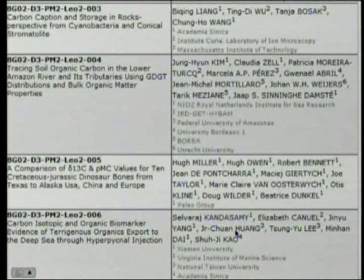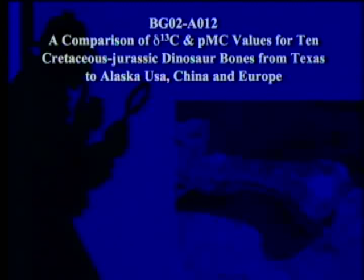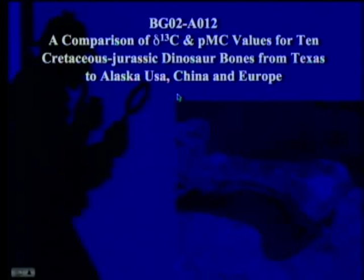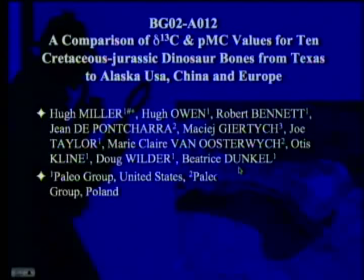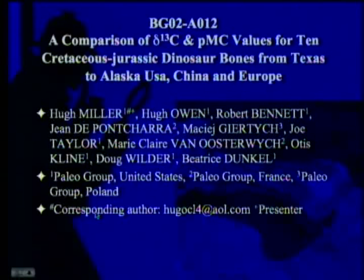Maybe they just didn't get an abstract in. Well, actually, it turns out they did have an abstract. The ID is BG012A012: 'A Comparison of Delta-13C and PMC values for 10 Cretaceous-Jurassic dinosaur bones from Texas to Alaska, USA, China, and Europe,' by Hugh Miller, Hugh Owen, and Robert Bennett — same guys — plus researchers from the Paleo group in the US, France, and Poland. The corresponding author is Yugo Ciel.